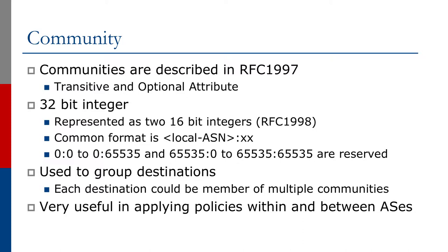We will be looking at communities in much more depth later on in this series. BGP community is a 32-bit attribute but is commonly represented today on the internet as two 16-bit integers. There was a supporting RFC, RFC 1998, written by a network operator describing how they used the early BGP community when it first appeared in router implementations. They represented it as two 16-bit integers because two 16-bit integers were easier for us humans to understand than one long 32-bit integer. The common format used is inserting your local AS number, then a colon, and then another 16-bit integer which is used to represent your local policy.